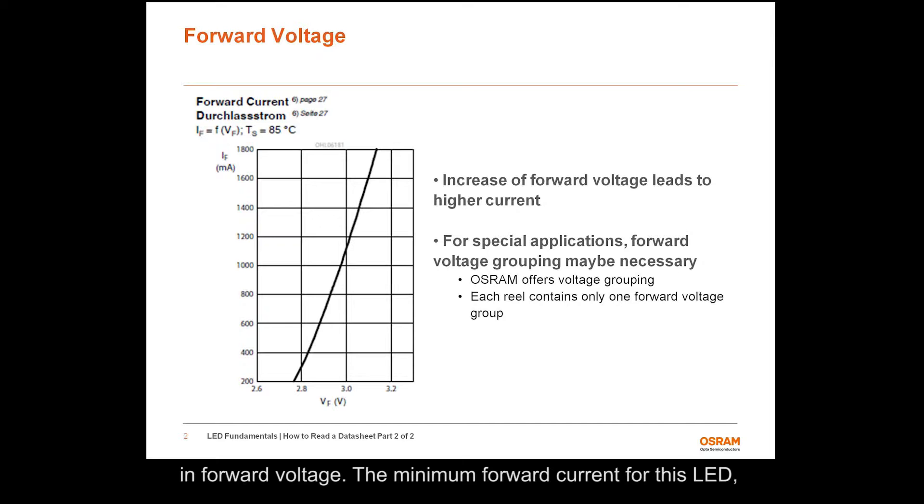The minimum forward current for this LED, listed on page 3 of the data sheet, is 200 milliamps. If the LED is operated below the listed minimum current, one could expect higher differences in values of forward voltage between LEDs in this region.